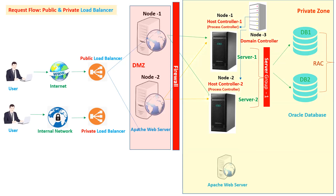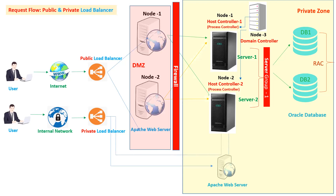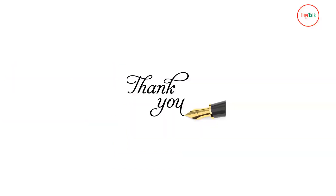In the backend the application server and database run in the private zone. The application is accessible from the internet via the DMZ where only web servers are placed, forwarding requests to the backend application servers. For internal network traffic, you don't necessarily need a DMZ. You can have a separate web server for internal traffic, diverting traffic from the private load balancer to that internal web server and on to the application server. Or, if no web server is needed, the private load balancer can route directly to the application server inside the private network. This is the high availability architecture for both private and public load balancing scenarios.